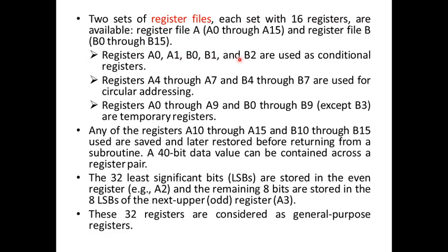Registers A0, A1, B0, B1, and B2 are used as conditional registers. Registers A4 up to A7 and B4 through B7 are used for circular addressing. Registers A0 through A9 and B0 through B9 (except B3) are temporary registers. Registers A10 through A15 and B10 through B15 are saved and restored before returning from a subroutine — they are exclusively used during branching operations. A 40-bit data value can be stored across a register pair: the 32-bit LSBs are stored in the even register (e.g., A2) and the remaining 8 bits are stored in the 8 LSBs of the next odd register (e.g., A3).